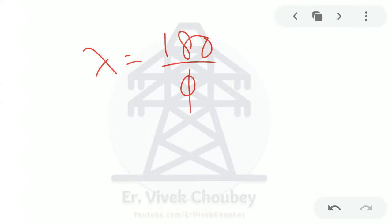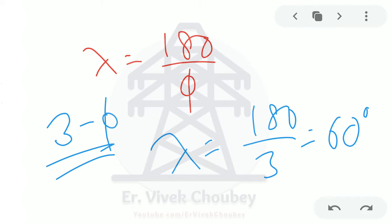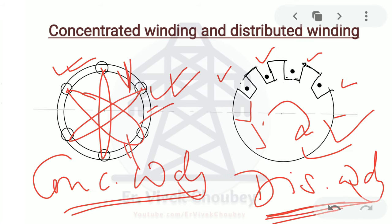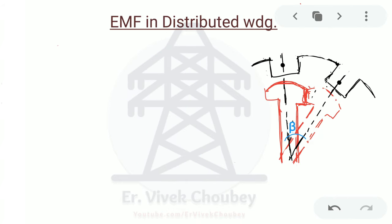This tells us that if we know how many phases there are, that is all the information needed to calculate the phase spread. For a three-phase machine, lambda = 180/3 = 60 degrees. So the angle subtended by the entire phase belt — the phase spread — is 60 degrees for a three-phase machine.